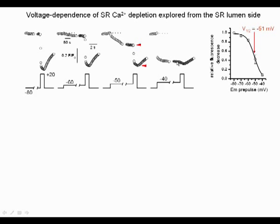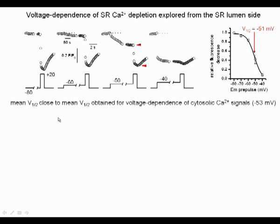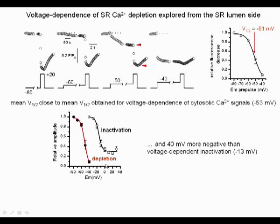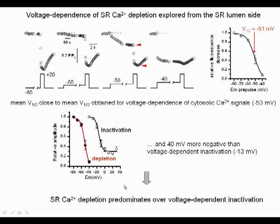SR calcium depletion occurs at very low voltage, so that when conditioning pulses were applied during long periods — here 2 minutes — the magnitude of calcium release and depletion induced by the subsequent test pulse were more and more reduced as the voltage of the conditioning pulses went higher. Interestingly, half-maximal inhibition produced by the conditioning pulse occurred at minus 51 mV on average, a voltage value very close to that inducing half-maximal reduction of cytosolic calcium signals. More importantly, these data indicate that the voltage dependence of calcium depletion is 40 mV more negative than the voltage dependence of inactivation, suggesting that SR depletion is the predominant process leading to calcium signal decline during long-lasting depolarizations.